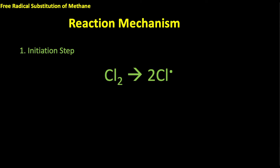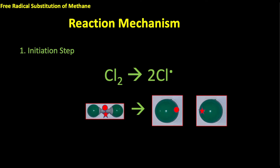The first step is our initiation step, and this is why we need the UV light. It takes a chlorine molecule and breaks the chlorine-chlorine bond, and each chlorine atom gets one of the electrons that was in that covalent bond. We call this homolytic fission, where the bond splits evenly — one electron goes to one chlorine and the other electron goes to the other chlorine.